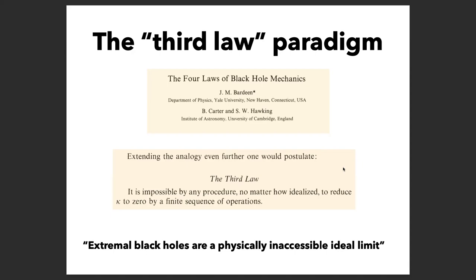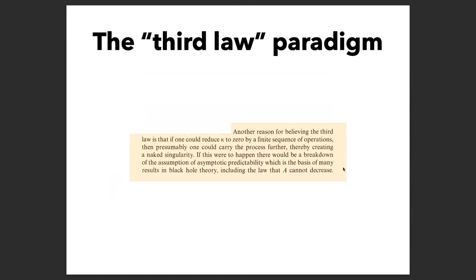I'm only going to talk about the last of the four laws, which is confusingly called the third law. In analogy with the third law of classical thermodynamics — that you cannot achieve absolute zero in some finite physical process — the analogy applied to black hole mechanics was that it should be impossible by any procedure, no matter how idealized, to reduce κ (the surface gravity, analogous to temperature) to zero by a finite sequence of operations. A caricature of this paradigm is: extremal black holes are a physically inaccessible ideal limit.